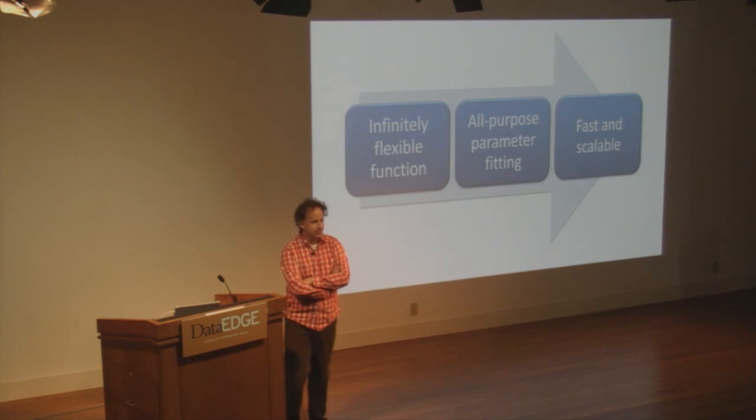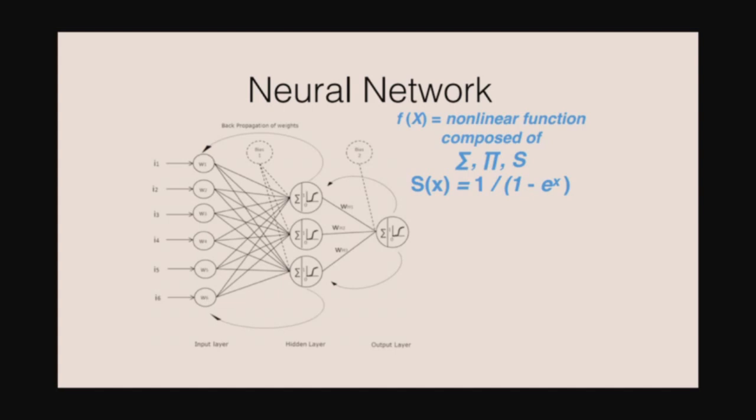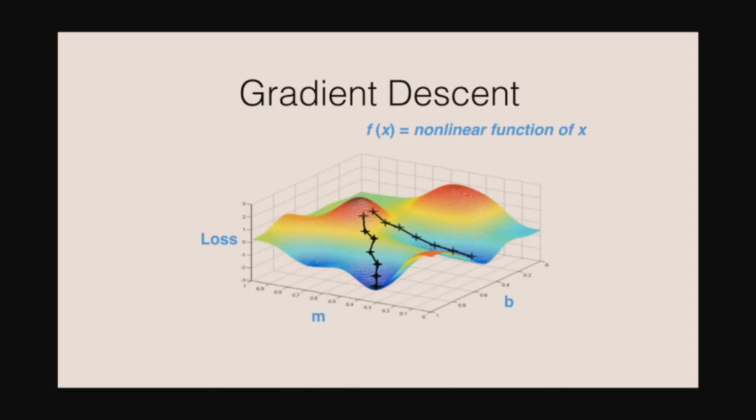In the 90s, there was a hope that perhaps the neural network — an algorithm, a functional form that had been around since the 60s — could be this approach. The neural network was a single hidden layer-based multi-layer perceptron, a very simple function which could be trained via gradient descent. Thanks to Peter Norvig from Google for the previous two slides.